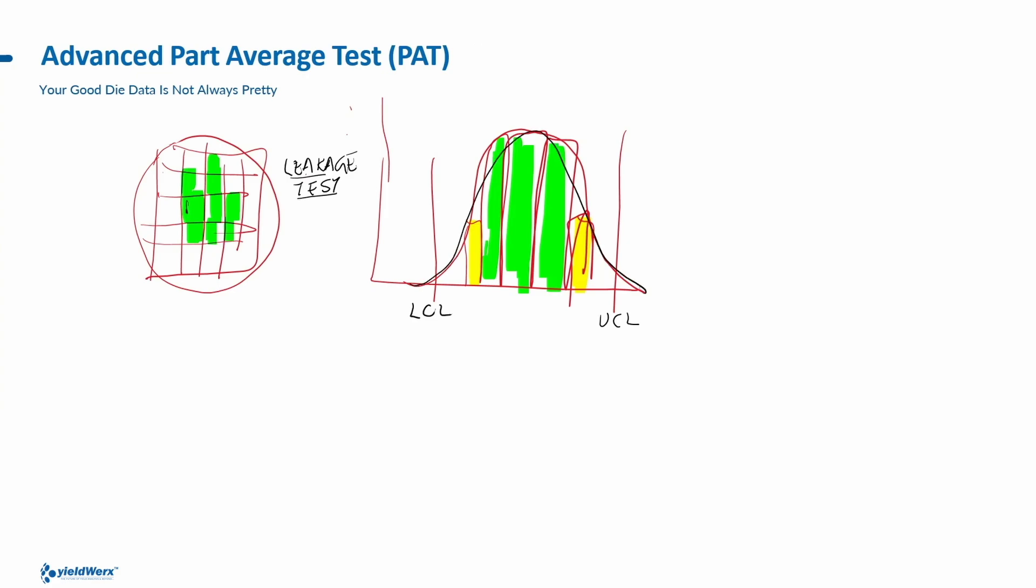And on those non-good die, I'm basically doing one of the leakage tests, and based on my leakage test results, I get a nice band, what we say a ghosting distribution of data. My ghosting distribution of data basically fits within the upper control limit and lower control limit. Traditional part-average tests assumed that the actual data is going to be always Gaussian in nature, a Gaussian curve. But in reality, that does not happen.